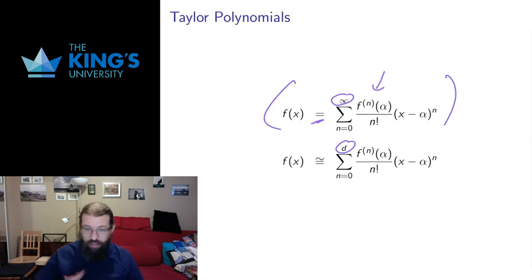So instead of having infinitely many terms, I could truncate it and say, well just give me the first seven terms, just give me the first 36 terms. And that gives me now a polynomial, this is no longer an infinite series. And this polynomial is no longer equal to the function, but it's similar to the function. And this is the idea of a Taylor polynomial.